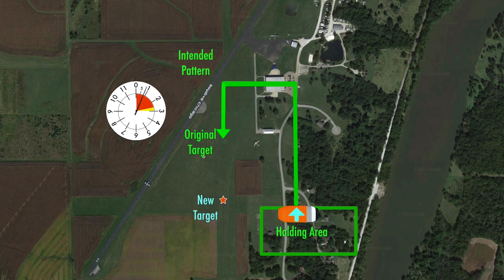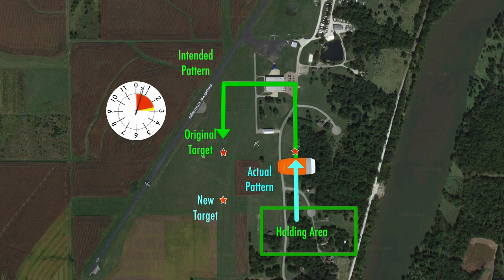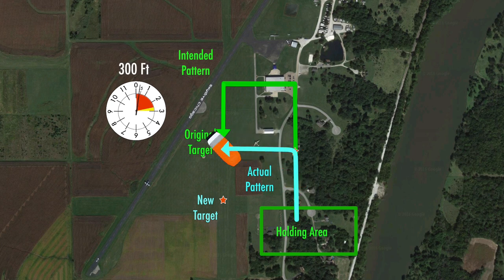You may also choose a different target and appropriate pattern points. Regardless of how you adjust, always prioritize altitude over position when making turns. That means it's better to commit to turning onto final at 300 feet in a different spot than you intended, rather than turn lower and attempt to reach a specific spot.